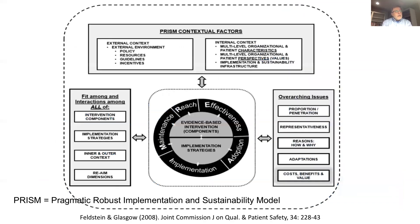PRISM stands for Pragmatic Robust Implementation and Sustainability Model. At the top are the key PRISM contextual factors. Like many D&I models, it has external and internal context. The internal context has a clear multi-level focus on the characteristics, priority, and history of both recipients and the individuals within an organization that serves as the setting for an intervention.